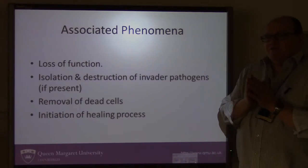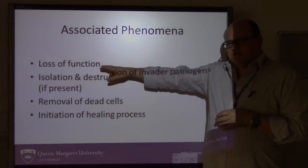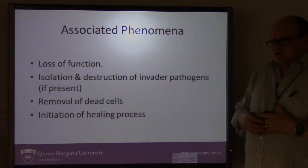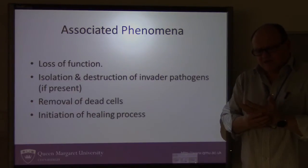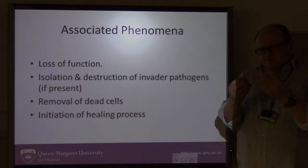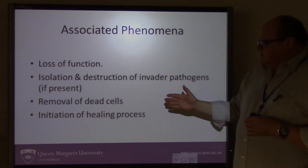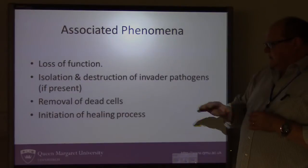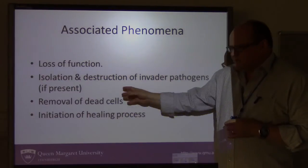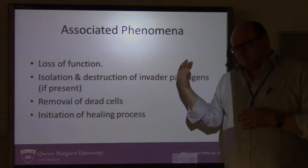Other things that happen when an area of tissue is inflamed: there can also be a loss of function, so the inflammation can be so bad as to actually limit use. For example, if there was inflammation in the hand or the fingers, that might actually prevent the fingers being able to lift or manipulate anything. You're also going to see dead cells in the area that have to be removed, and healing processes kicking off, which we'll talk about as we work through the process of inflammation.